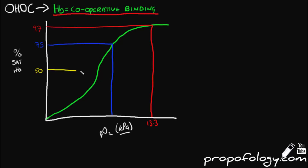If we plot the P50 or 50% saturations value, it also hits a steep part of the curve, and its kPa value is 3.5. Compare this to venous blood's kPa, which is 5.3 — they're not so different, but very different to arterial blood's kPa. This explains why we get very concerned with what seem to be small changes in saturations, as these drops in saturations can represent huge changes in the partial pressure of oxygen in the blood.